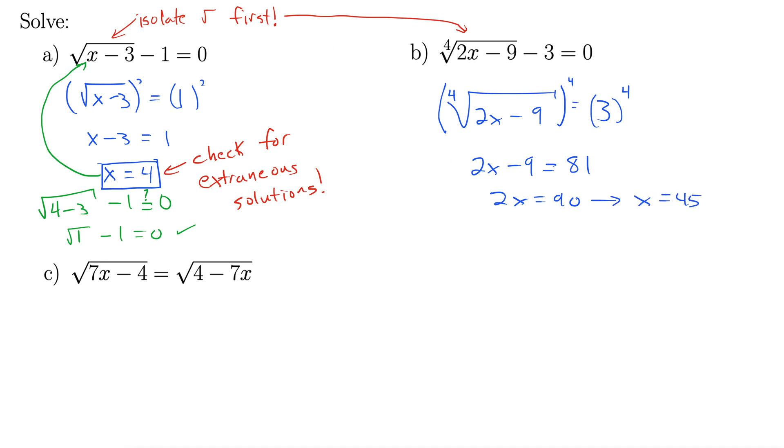Okay, make sure we check once again. If we plugged in 45 for x, we would get 2 times 45, which is 90 minus 9 is 81. So we're looking at 4th root of 81 minus 3. Does this equal 0? Well, yeah, it does. 4th root of 81 is 3 and 3 minus 3 does indeed equal 0. Check. So this is a valid answer right here. x equals 45.